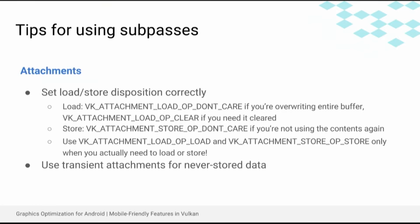So there are some tips for using this well. First, you want to make sure that the attachments to your frame buffer have the load and store disposition set correctly. Basically, you don't want to use load-op-load or store-op-store unless you actually need to load or store — otherwise you're paying overhead that you don't need to. And you can use transient attachment for data that you never store, like the traditional use of depth buffer, in order to avoid allocating any off-chip memory to store them.